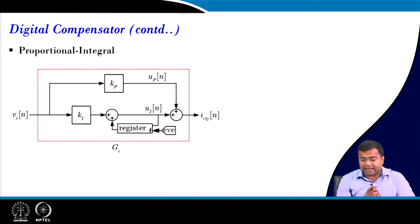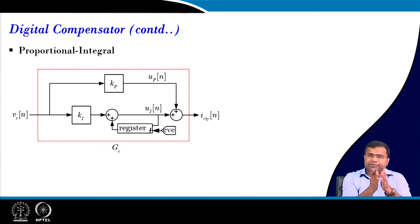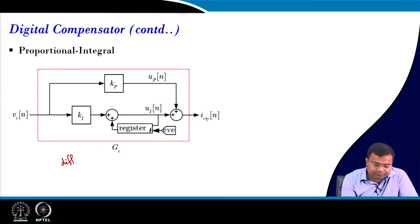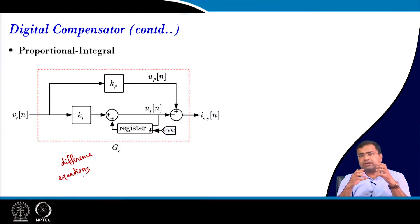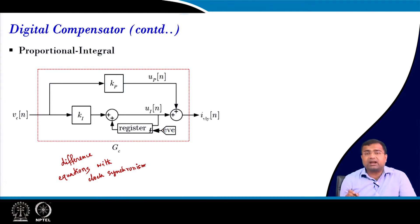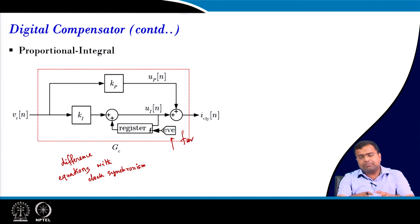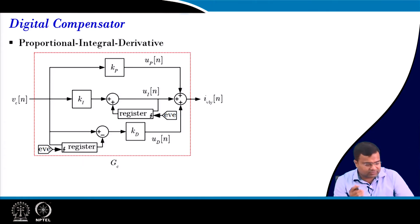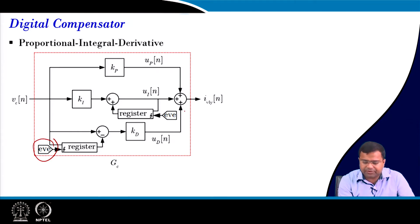In this PI controller, the realization is exactly the same as what we have discussed for the previous two classes — for full digital as well as mixed signal current mode control and voltage mode control. We use a difference equation with clock synchronism. The only difference is that in the earlier case we used a fixed-frequency clock, whereas here we use an event-based clock. But the block diagram realization is exactly the same.